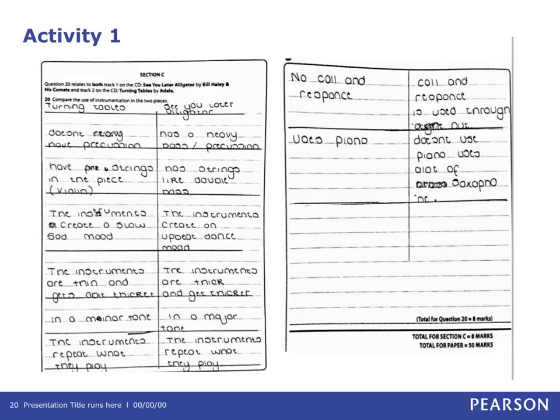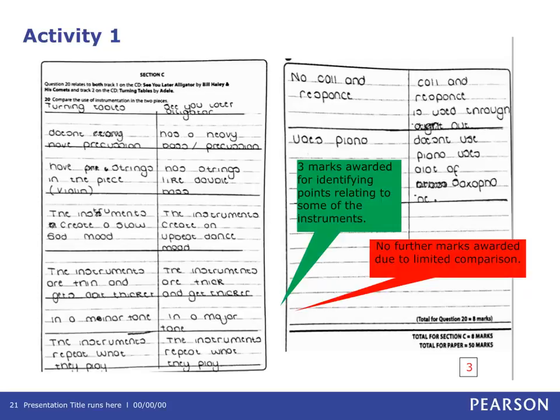Activity 1 includes a learner response for Question 20 that doesn't include the mark awarded. Spend some time thinking about what mark you would award for this response and consider why. You will need the mark scheme to hand for this activity. In this example, the learner has gained a total of three marks. Basic similarities between the pieces are identified but not compared in full. Reference to instrumentation is limited. Statements made are generic with some application to the context in the question. The learner is in the upper range of the lower mark band of the mark scheme.